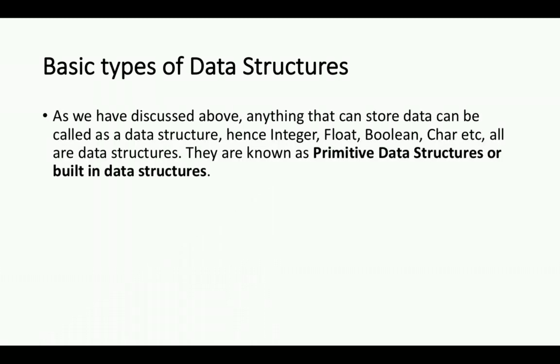As we have discussed above, anything that can store data can be called as a data structure. Hence integer, float, boolean, character, etc., all are data structures. Koi bhi cheez jo data ko store karti hai organized way mein, organized tarike se, operations implement karne deti hai, usko hum data structure bulate hain. For example, integer, float, boolean, character—these are all data structures. They are known as primitive data structures or built-in data structures.